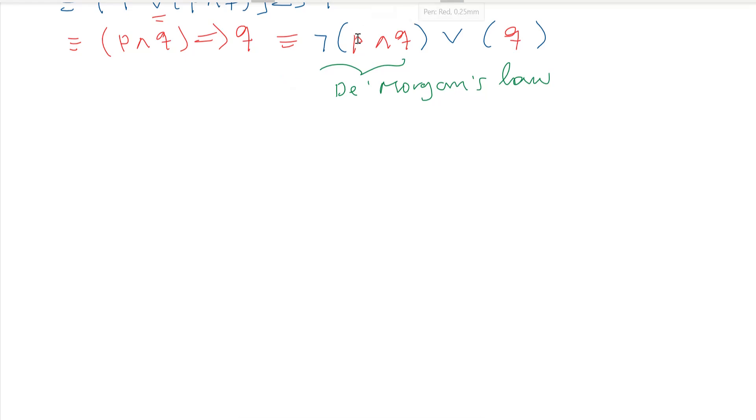So we will apply De Morgan's law. This one is equivalent to negation of [p ∧ q]. The negation of [p ∧ q] is equivalent to the negation of the first or the negation of the second. This is De Morgan's law.